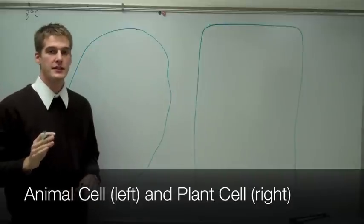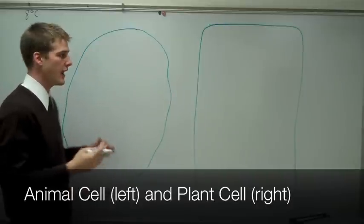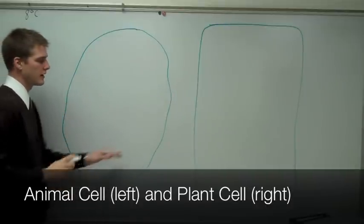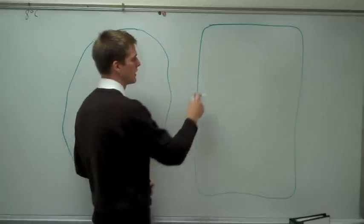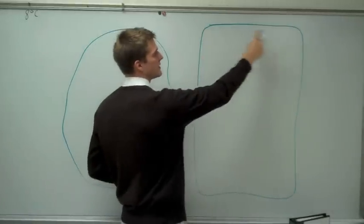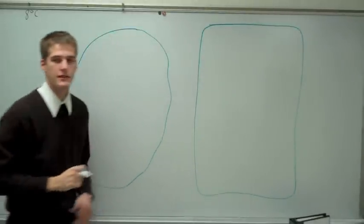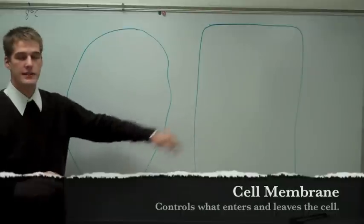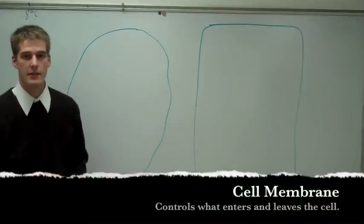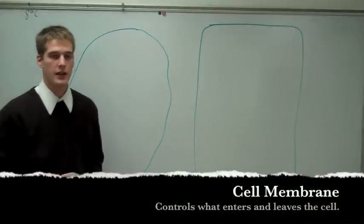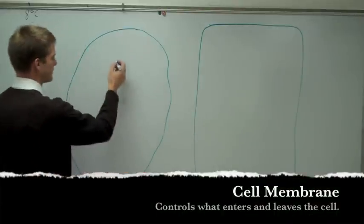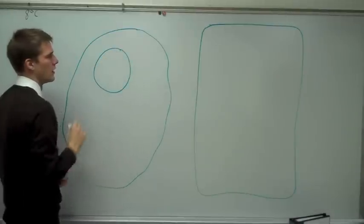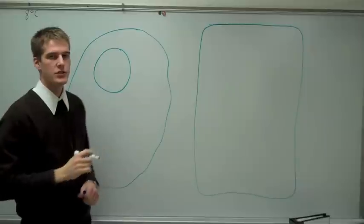The basic thing that makes a cell is it has to have a cell membrane. The cell membrane is shown in blue, and this is the inside of the cell membrane of the plant. Both animal and plant cells have a cell membrane.